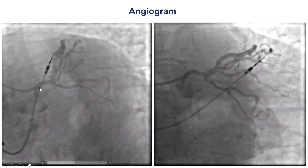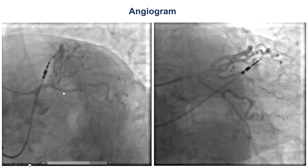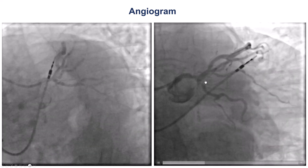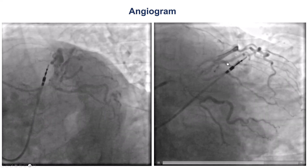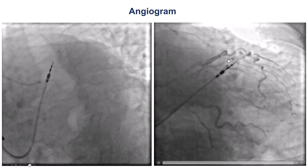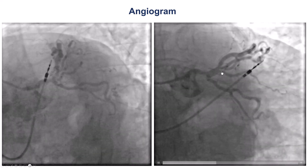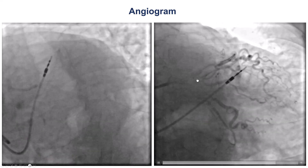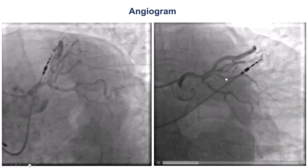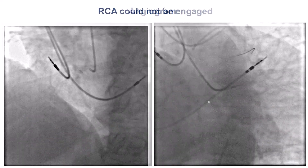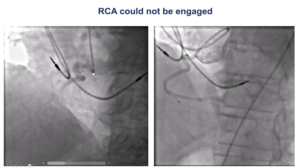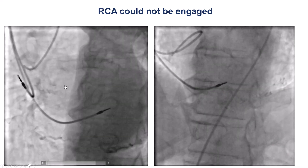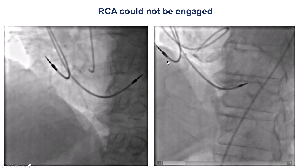The procedure was done through radial access with very difficult engagement, so to be able to visualize we actually had to use a wire to anchor the catheter. But eventually we obtained images of the left coronary artery. There are some intermediate lesions in the circumflex and the LAD, but we had extreme difficulty engaging the right coronary artery, which seemed to have an ostial lesion.